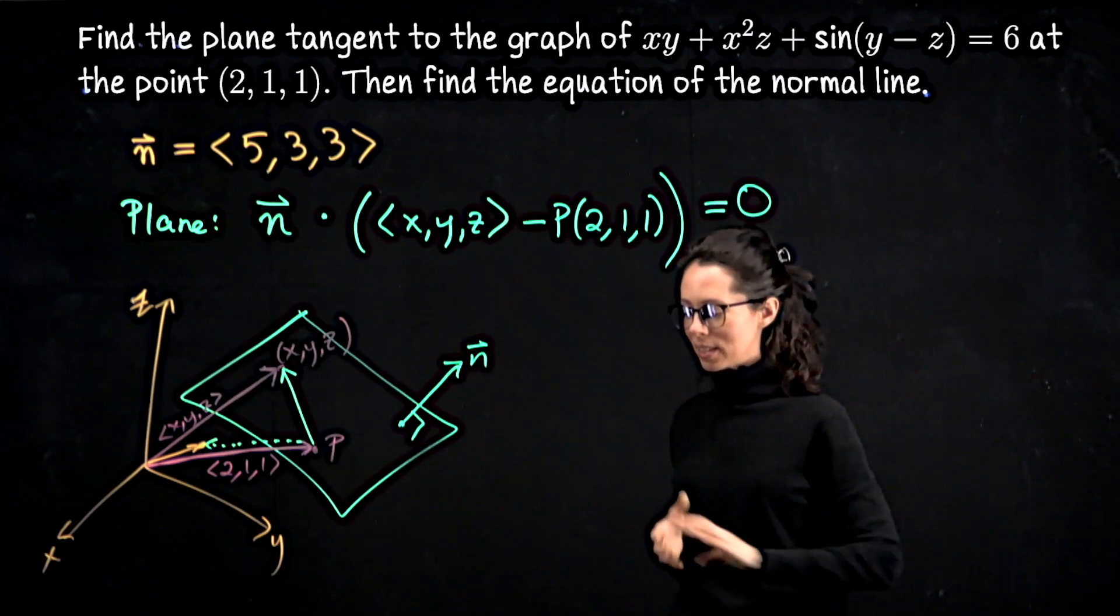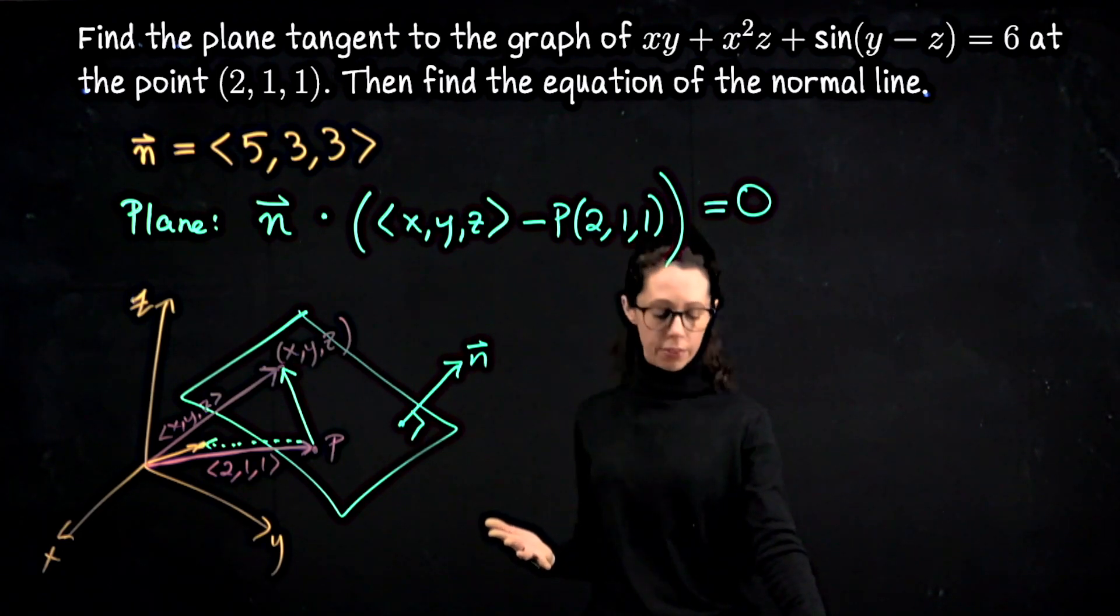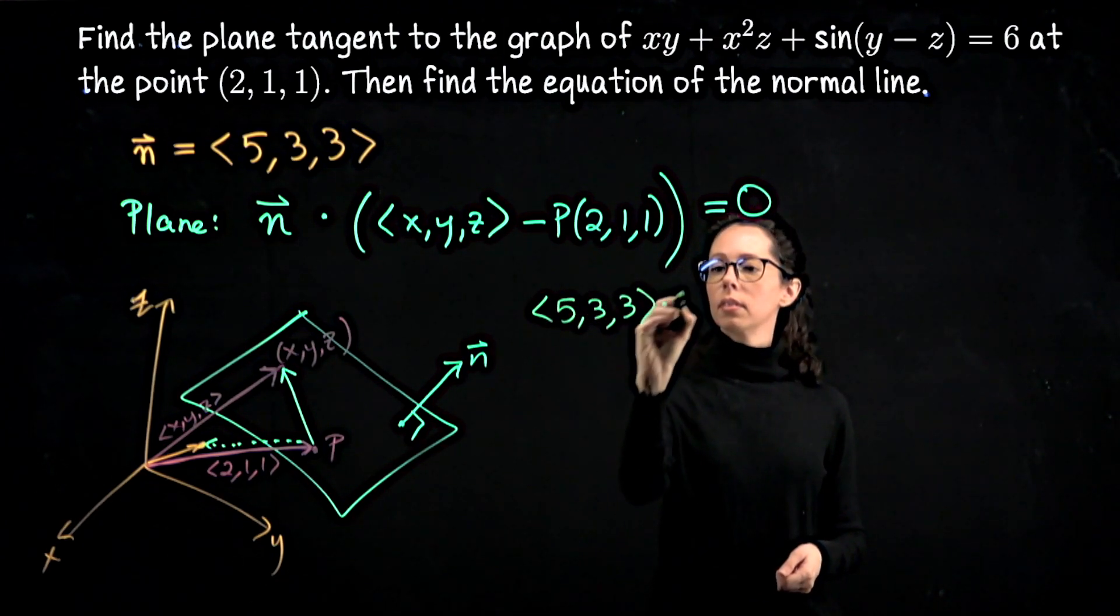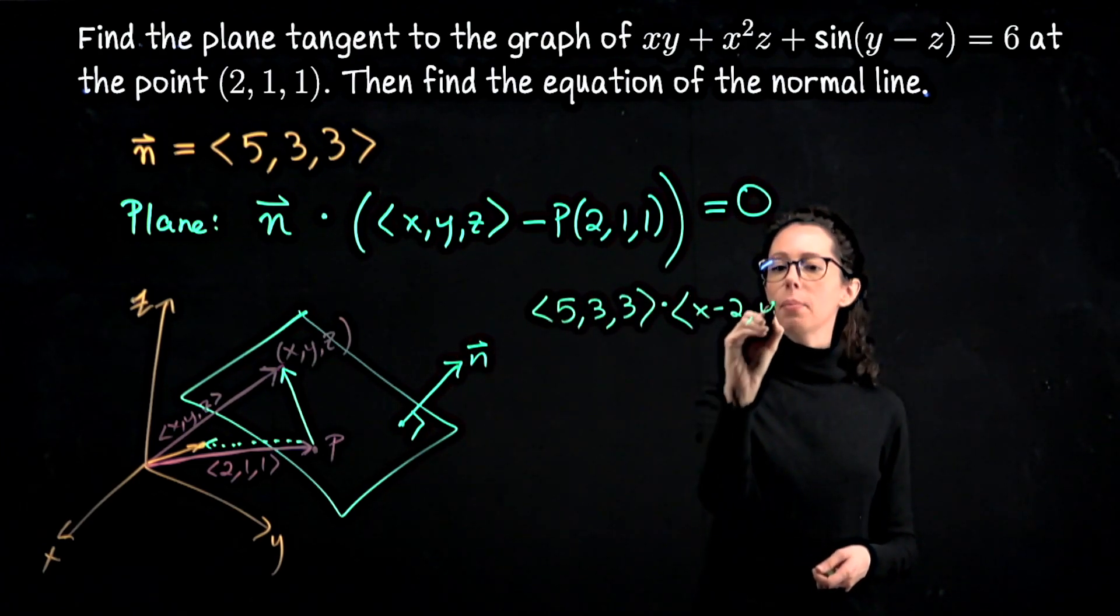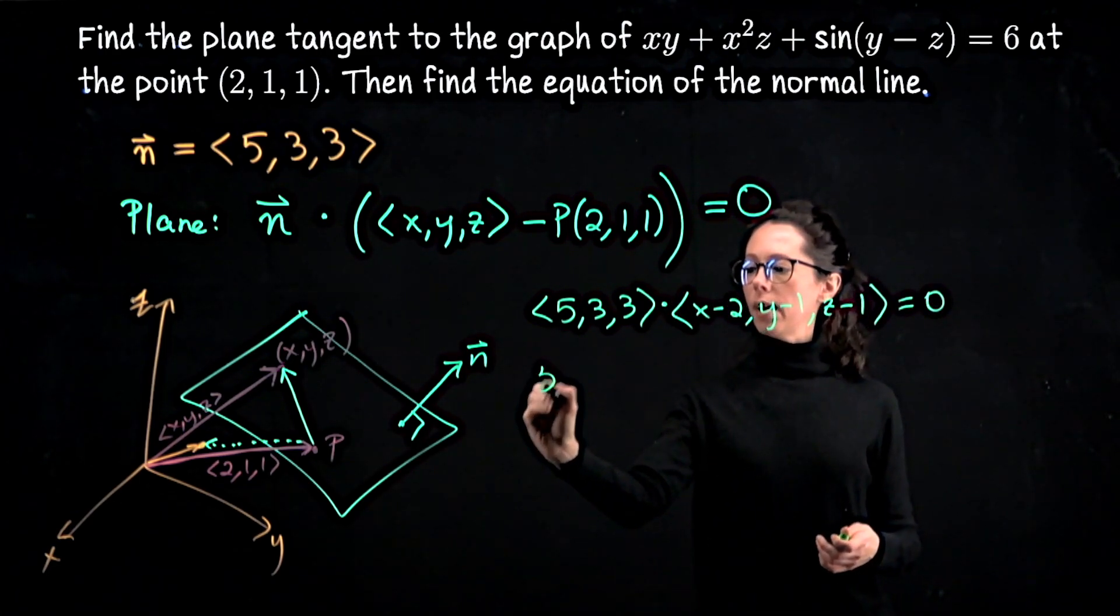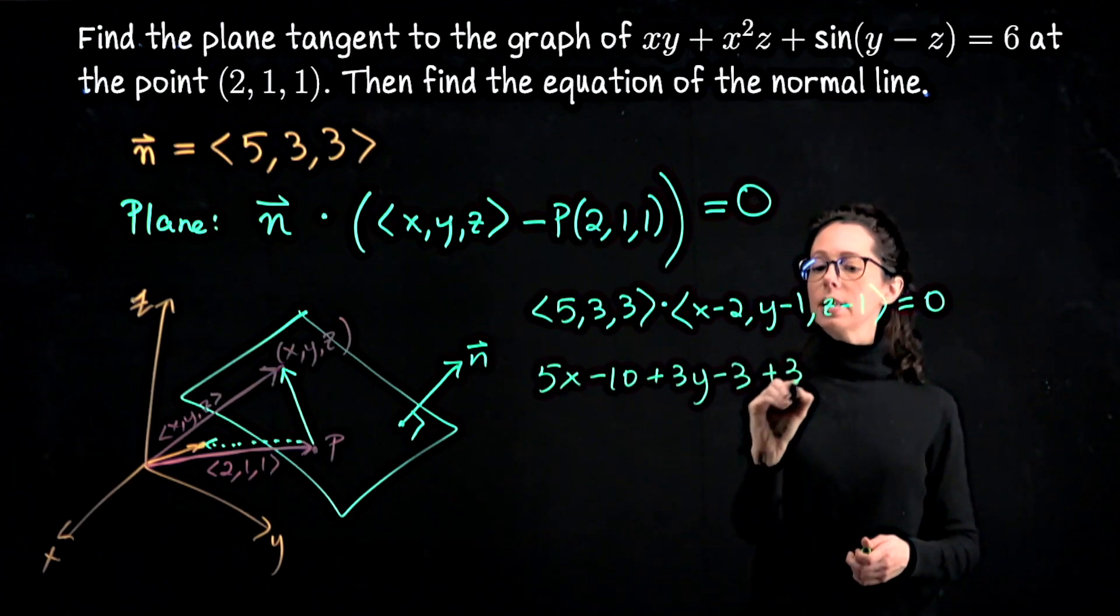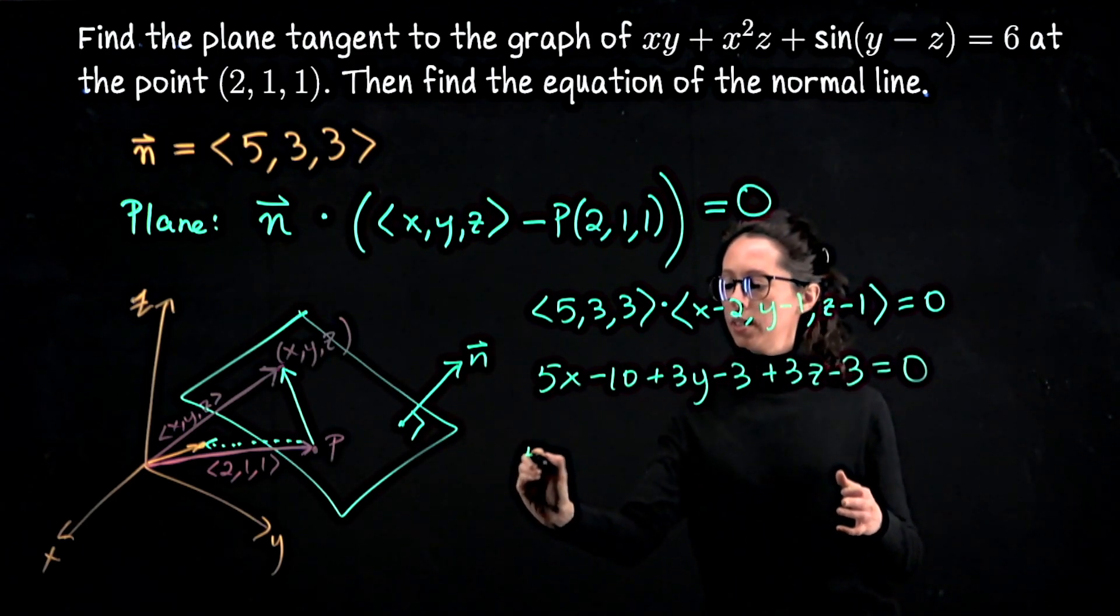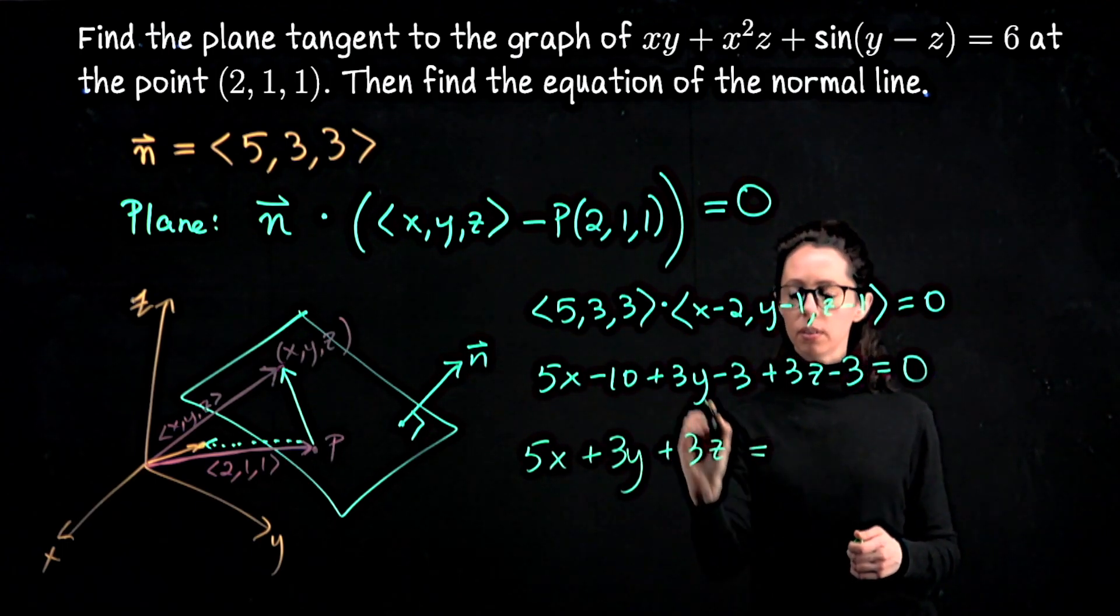I didn't actually intend to go back through that in this exercise, but I just wanted to revisit it after writing down this equation. We're done. We just need to now fill in the details. So n itself is <5, 3, 3>. (x, y, z) minus the vector (2, 1, 1) is going to look like (x - 2, y - 1, z - 1). This dot product is 0, so now you expand it and you get 5x - 10 + 3y - 3 + 3z - 3 = 0. And then traditionally we're going to group x, y, and z on the left. So 5x + 3y + 3z = 16.